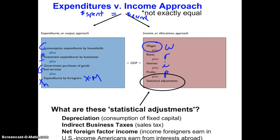So wages plus rents plus interest plus profits roughly also equals GDP. But there are some statistical adjustments that account for the differences between GDP as calculated by the expenditures approach and the income approach. GNP does come up in it.